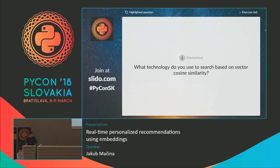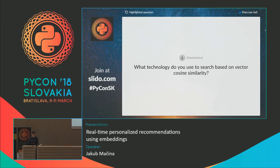One more question: what technology do you use to search based on vector cosine similarity? As I presented, the Gensim library can do this out of the box.